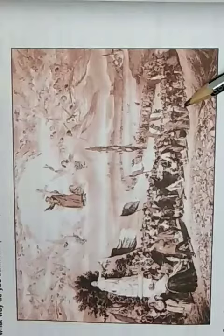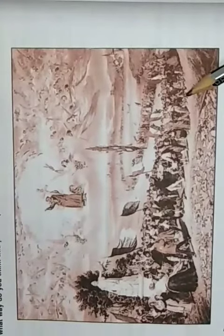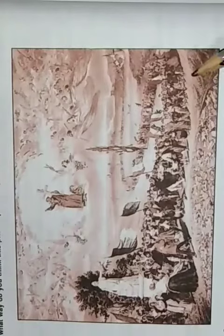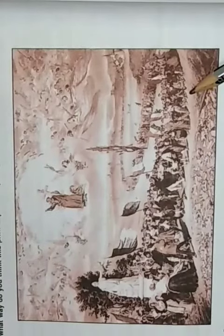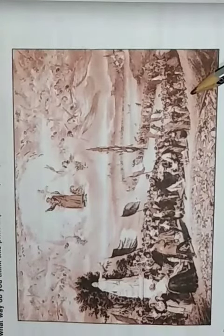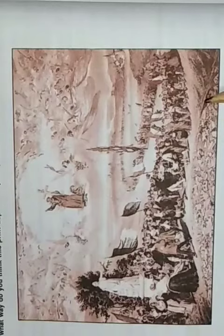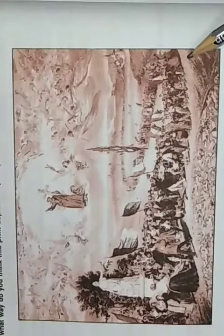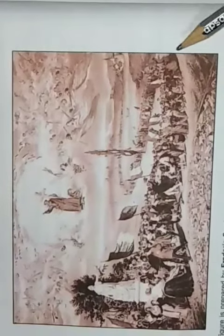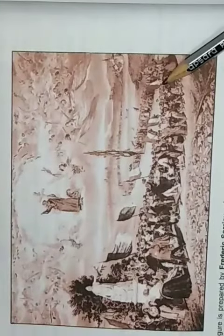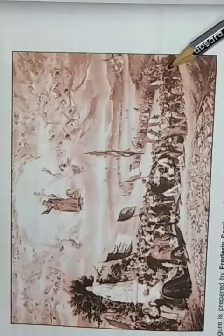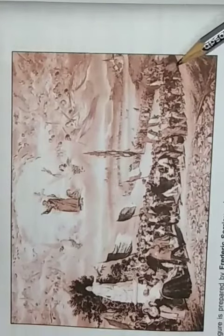Students, see this picture. This print depicts a utopian vision — utopian means Adarsh Kalpana, envisioning an ideal society. This figure was prepared by Frederick Souriau, who was a great French philosopher. He prepared a series of four prints visualizing his dream of a world made up of democratic and social republics.